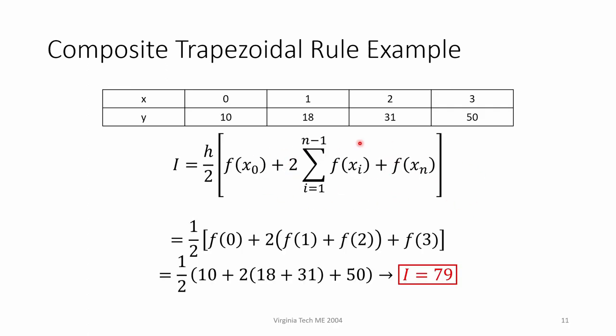Here's the formula from slide five. Let's focus on the bracketed term first. We add the y values of our endpoints, aka f(0) and f(3), to two times the summation of our interior y points. We add f(0) and f(3) to twice the sum of f(1) and f(2). Afterwards, we multiply the entire bracketed term by h/2. If you plug in the numbers, you get I equals 79 units.